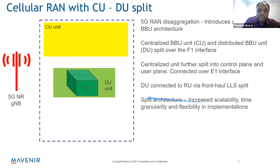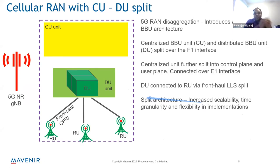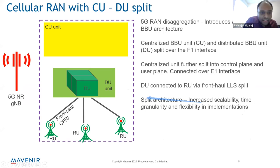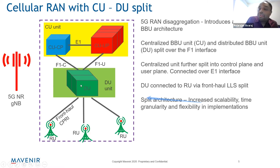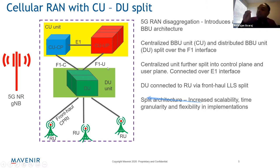In 5G, the baseband unit from 4G got disaggregated — it was split into a centralized unit (CU) and one or more distributed units (DU), connected to radio units. The centralized unit itself was split into a CU control plane (CUCP) and one or more CU user planes (CUUP). The CUCP talks to the CUUP using the E1 interface, and to the distributed units using the F1 interface — with F1C for control plane and F1U for user plane. Control plane handles context establishment and signaling; user plane handles data transmission.